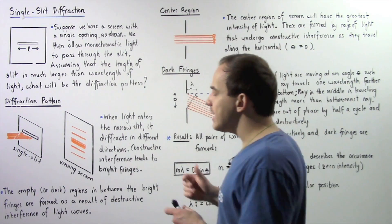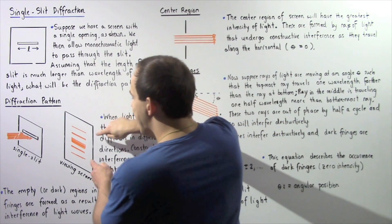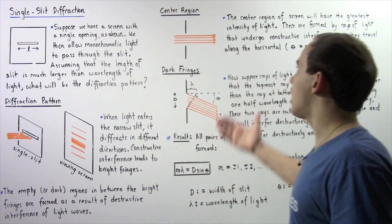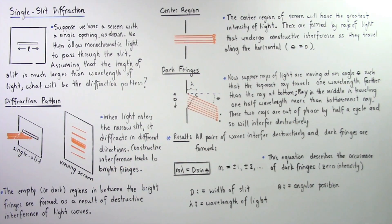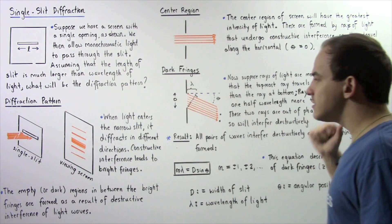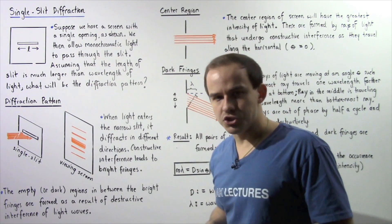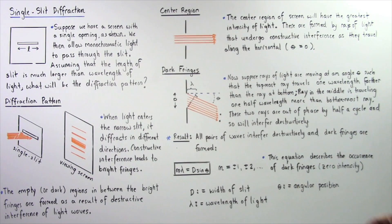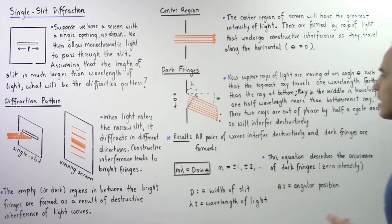In a very similar way, that's exactly how the rest of the bright fringes are formed as a result of constructive interference. Now let's discuss how the dark fringes are formed. Suppose that rays of light are moving at an angle theta such that the topmost ray travels one wavelength farther than the ray at the bottom.